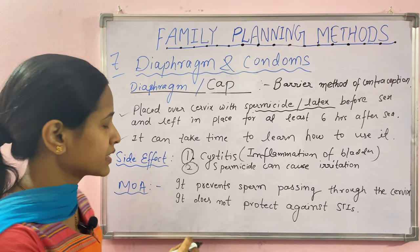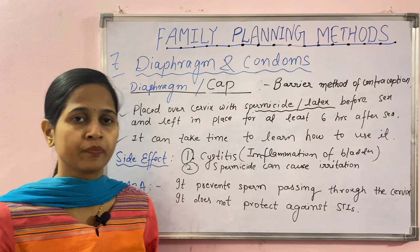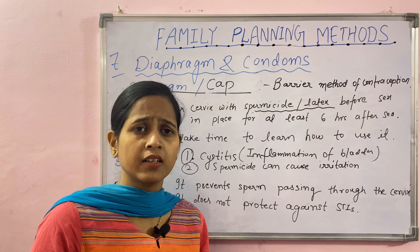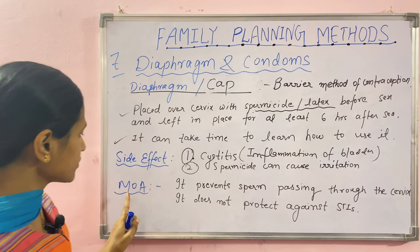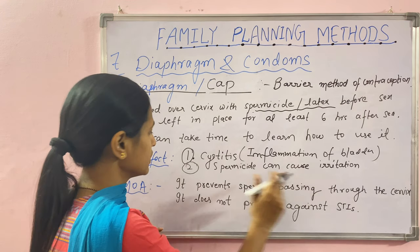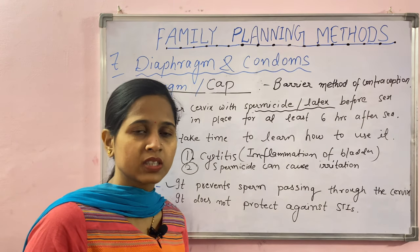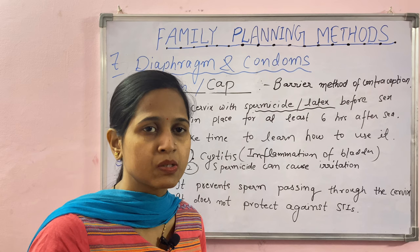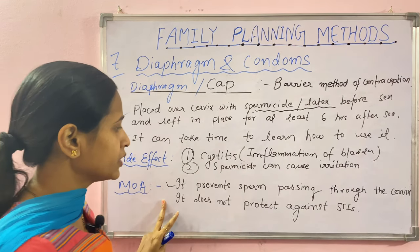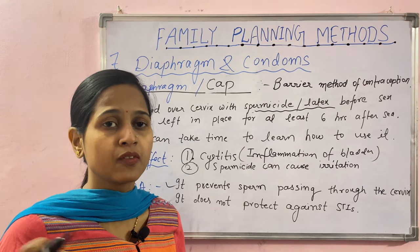The second side effect is that spermicides can cause irritation for both you and your partner. Regarding the mechanism of action (MoA): the diaphragm prevents sperm from passing through the cervix. One important limitation is that it does not protect against STIs — sexually transmitted infections.